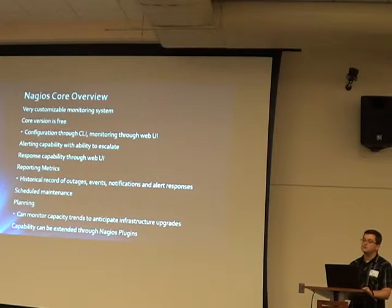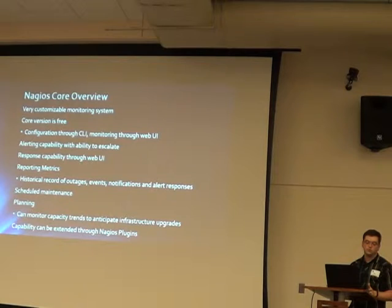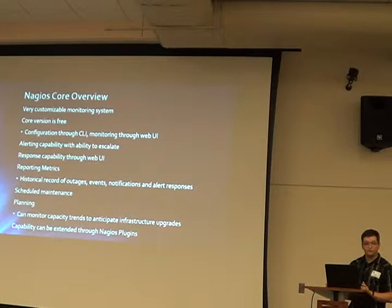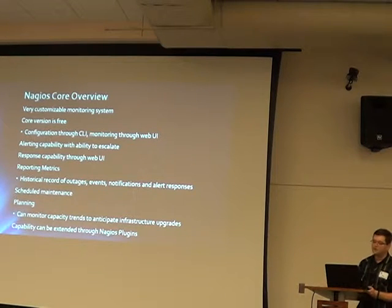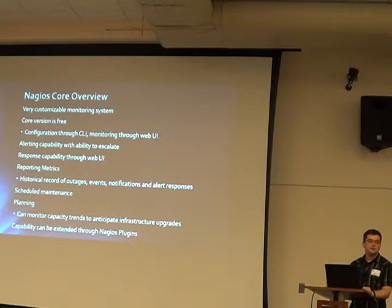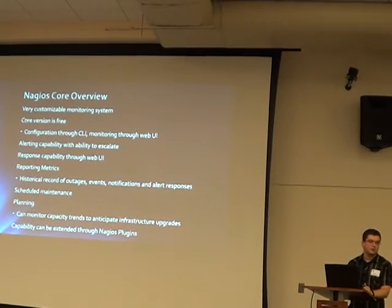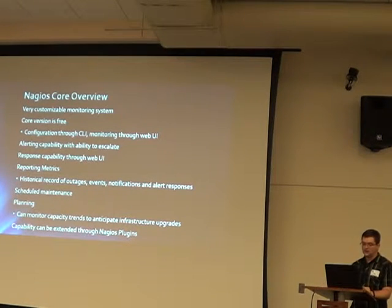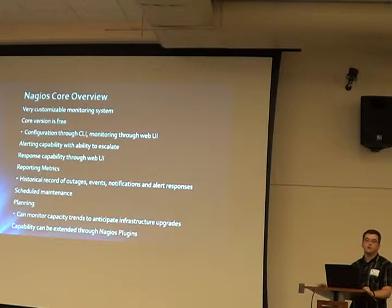You can do scheduled maintenance in two ways: schedule a specific downtime, or use an offset so it counts from when the system first goes down. It also helps with capacity planning — you can monitor CPU usage, memory usage, number of users, track capacity trends, and anticipate when you need infrastructure upgrades. Its capability can be greatly extended through Nagios plugins, which we'll briefly touch on.